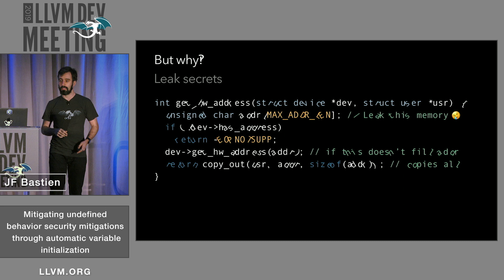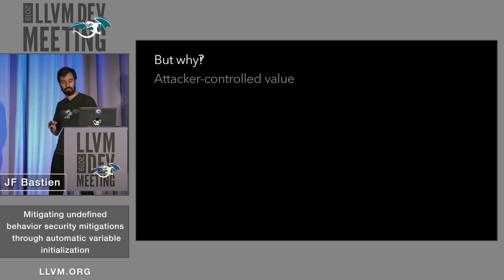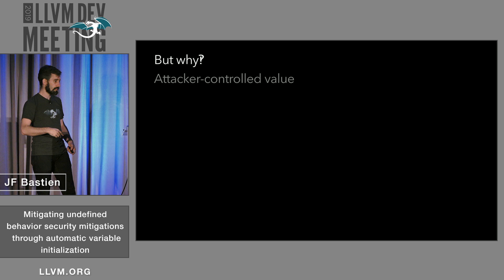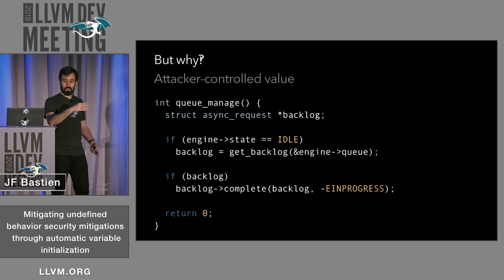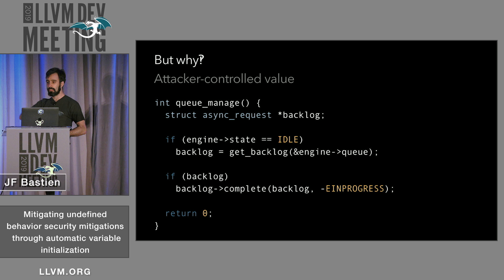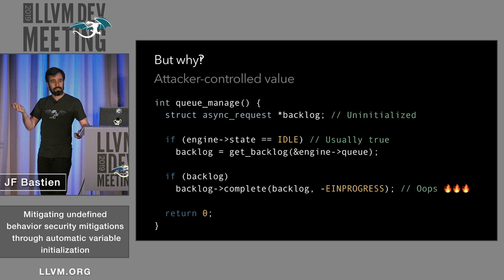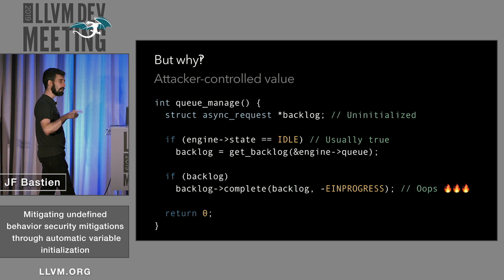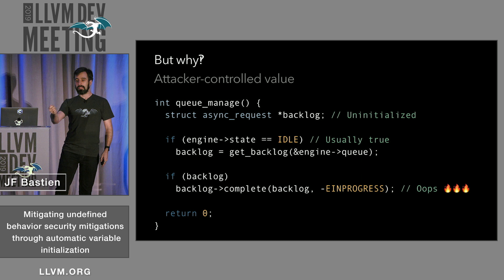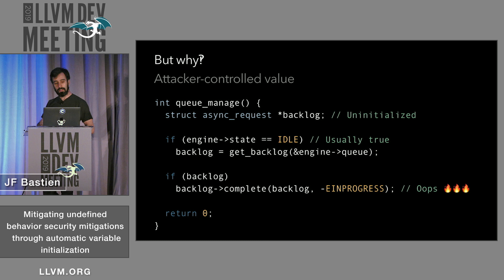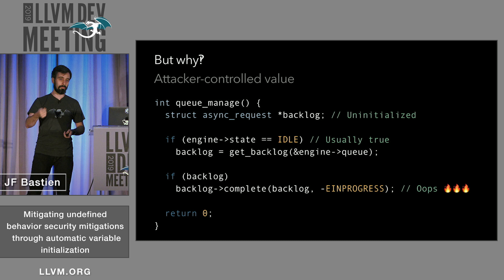The other thing I care about most is attacker-controlled values. Here's an example from an actual exploit fixed in production code. There's a backlog variable: if state is idle, initialize it; otherwise use it. Obviously uninitialized in some paths. The value is usually true so the check never fires, but the uninitialized value gets used. If I can put a pointer into the backlog variable by getting you to call a function first, then get you to call this code path, I can get you to call the complete method on any pointer I choose. That leads directly to an exploit.